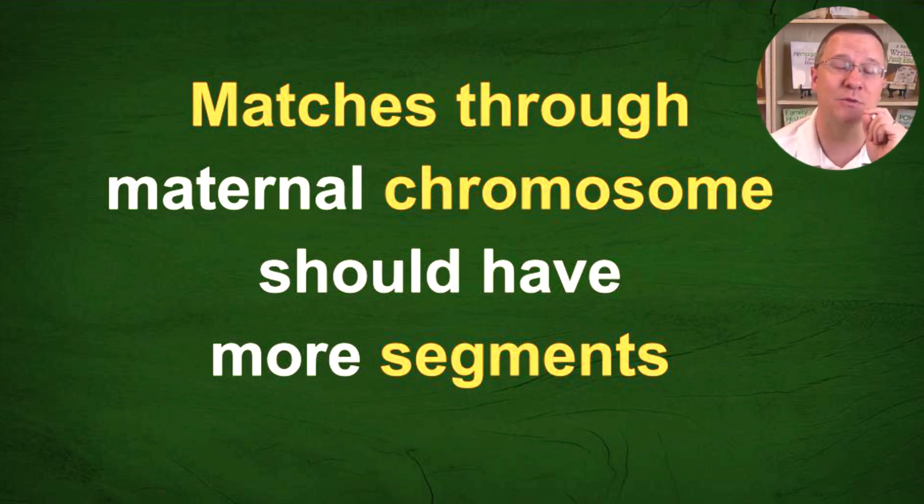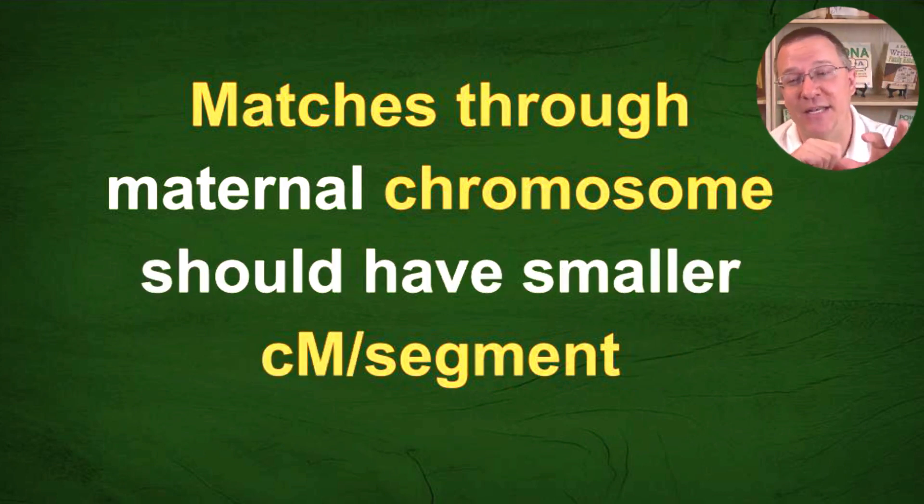And that then, of course, leads to the third thing: that the matches through the maternal chromosome should have smaller centimorgans per segment, because you have the same amount of centimorgans but more segments, so that number is going to be smaller. So after I got that in my mind, I figured, okay, what can I do to test this now?